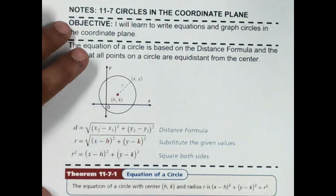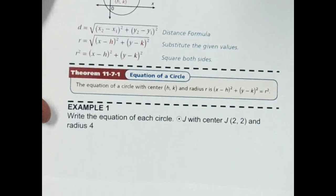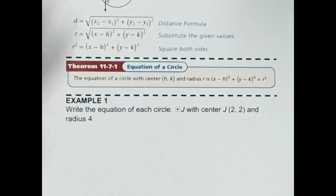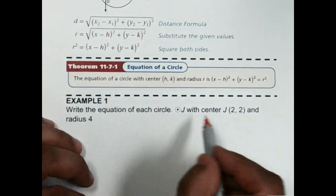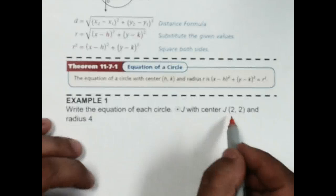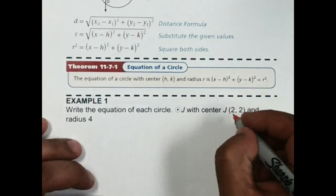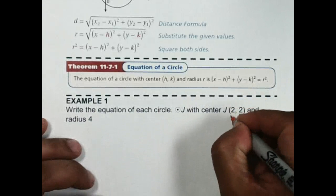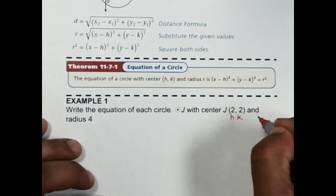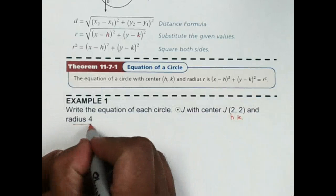All right, so let's just jump in and work one of these problems. Write the equation of each circle, circle J with the center of (2, 2). So this would be my h, and this would be my k, and I know the radius is 4.